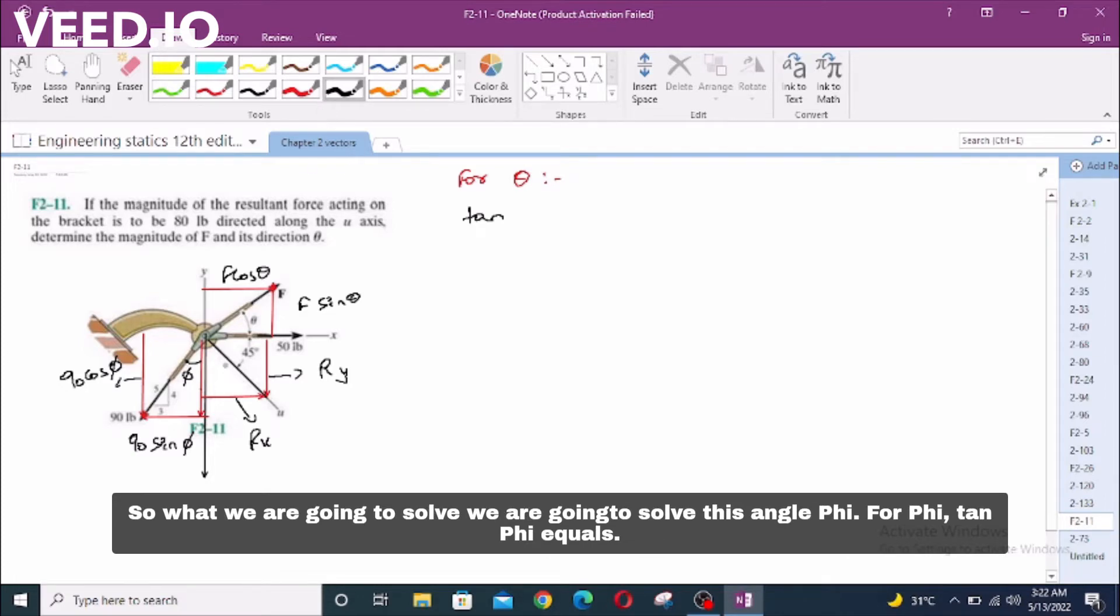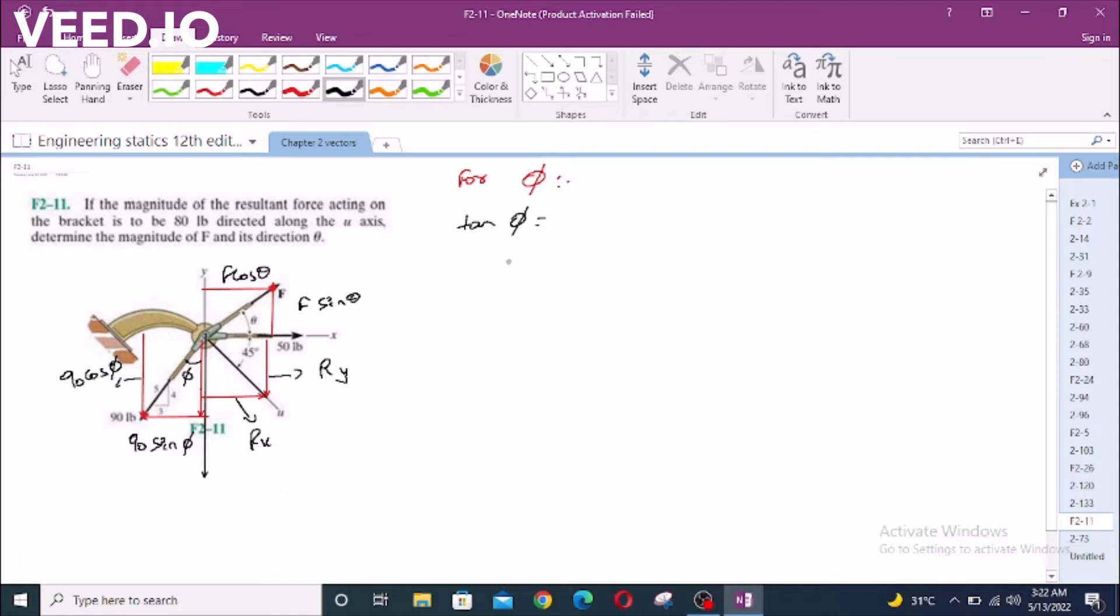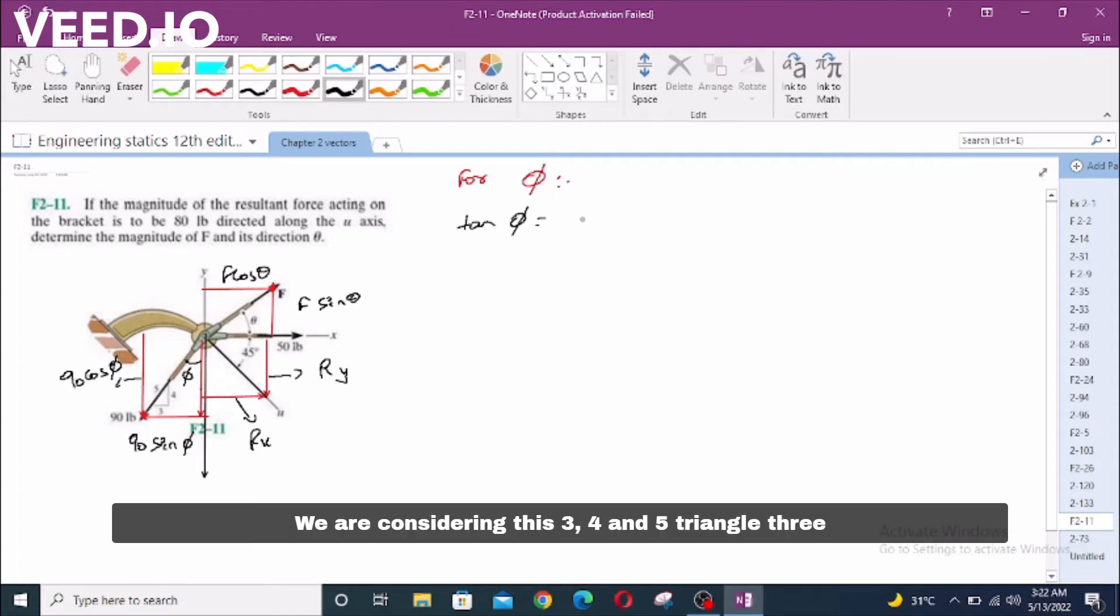We are going to solve this angle phi. We are considering this 3-4-5 triangle. Tangent phi equals 3 over 4. Phi equals 36.86 degrees.